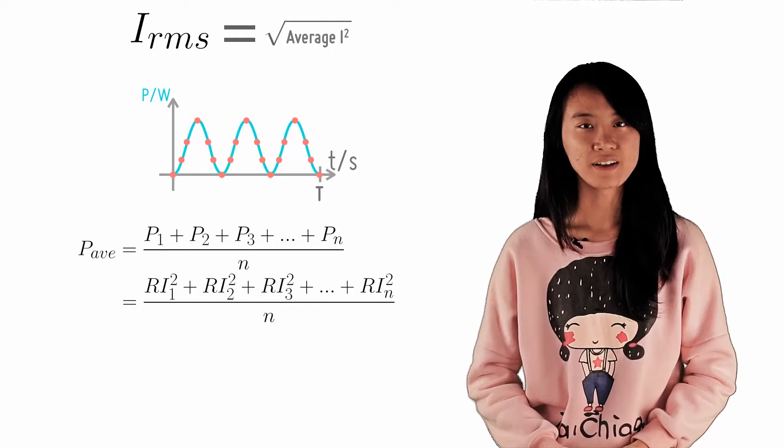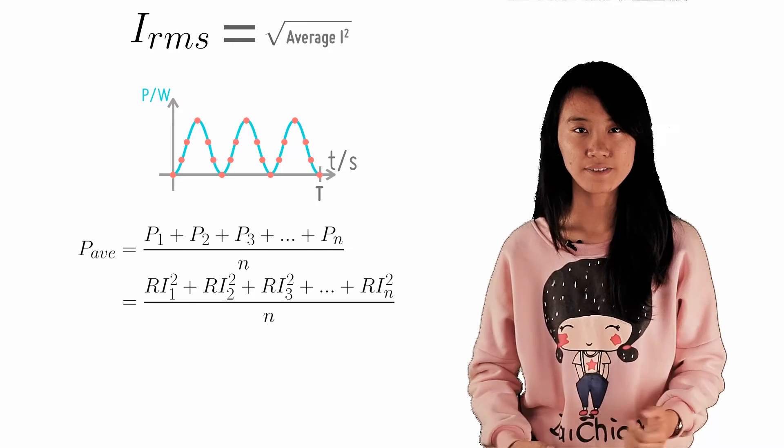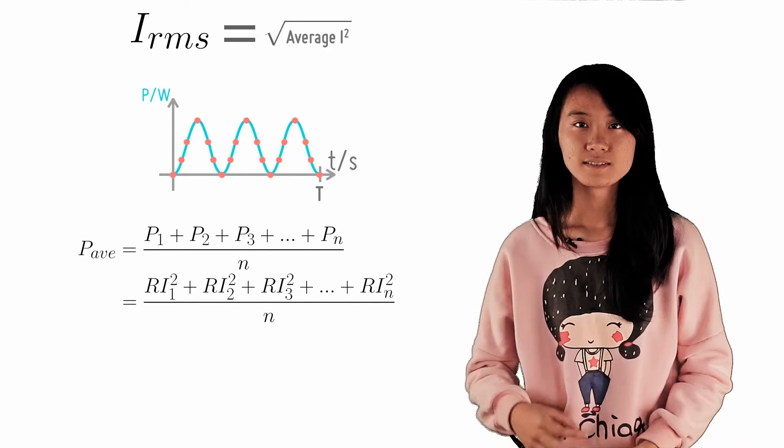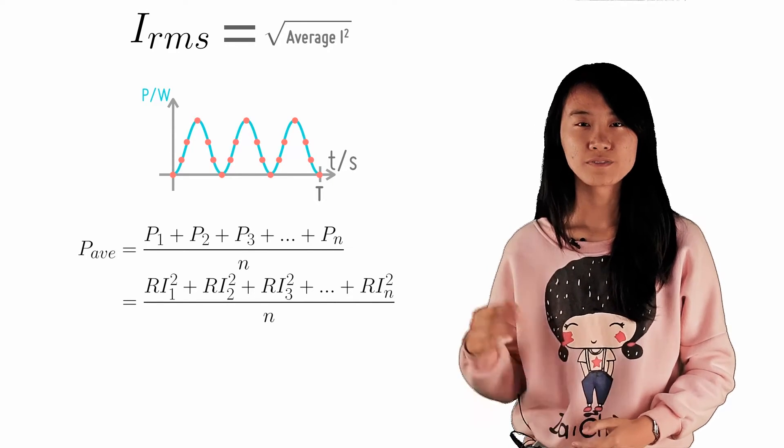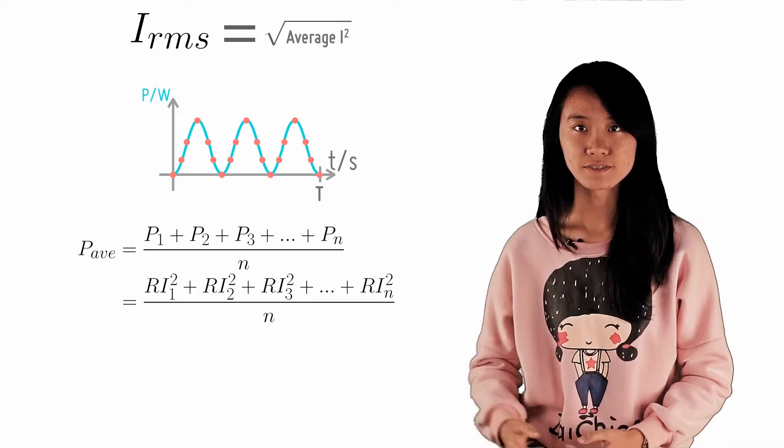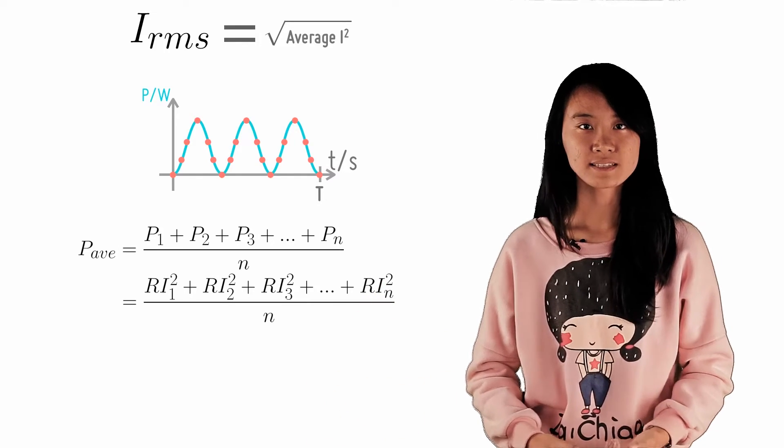By applying the formula P equals I squared R to every instantaneous power, this simplifies the equations with I1, I2, I3, and so on, being the instantaneous currents.